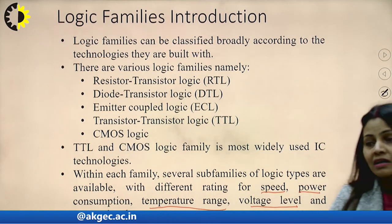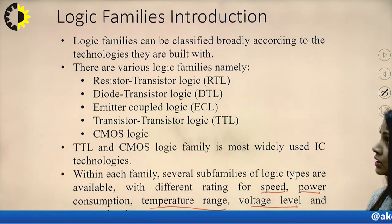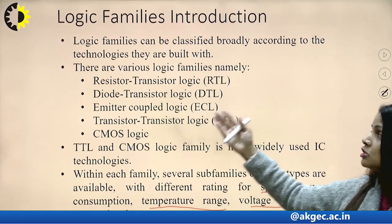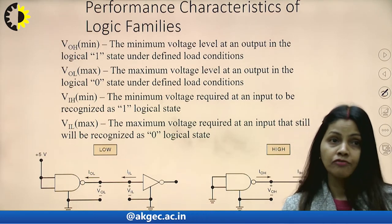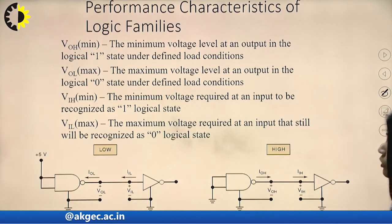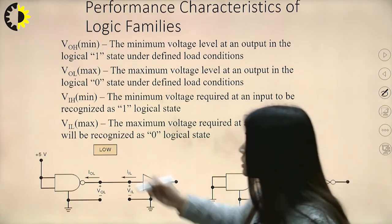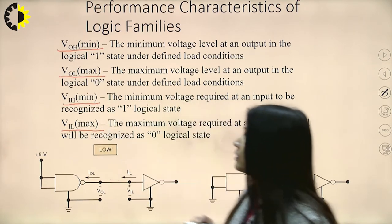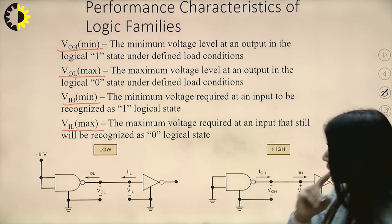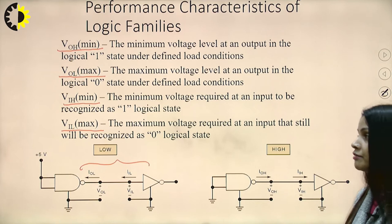Sometimes these parameters are related to miniaturization also. As far as we are concerned, we should understand the characteristics of these logic families. Here we have some performance characteristics of logic families. Now we have four parameters basically. Sometimes questions may come from what are the parameters: VOH, VOL, VIH, and VIL maximum. These parameters are being evaluated between two gates, so let us understand how we are defining these four parameters.